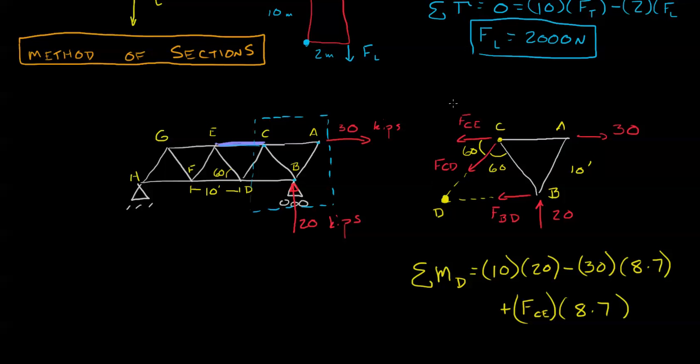So note that by taking the section correctly and then summing the moments about an external point, we've gotten one equation, one unknown. And if we solve this, we get 7 kips.